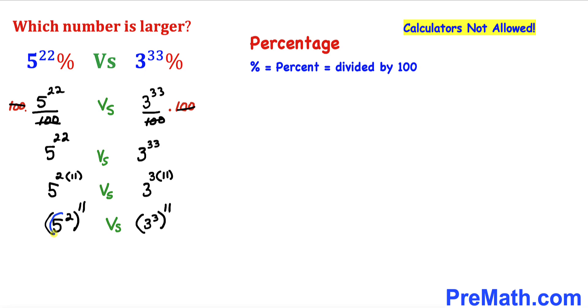Now we can see that 5 to the power of 2 is 25, and 3 to the power of 3 is 27. Therefore, the left-hand side number could be written as 25 to the power of 11 versus the right-hand side number, 27 to the power of 11.